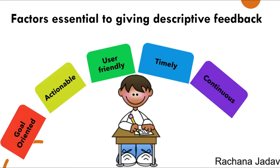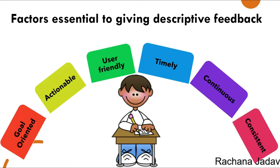Next is continuous — feedback must be continuous. It should not only happen when performance appraisals are given or when a report card arrives. To improve that result, we have to be continuously engaged with the students and keep helping them understand where they need to work harder. Next is consistent — you have to be consistent and give follow-up to check whether they are improving.